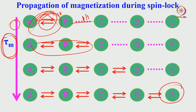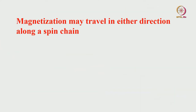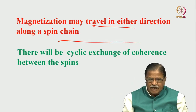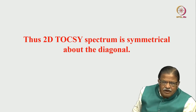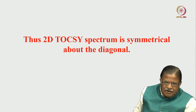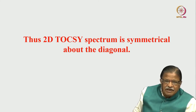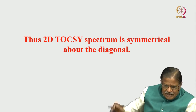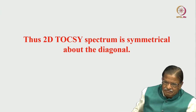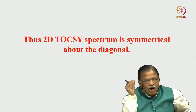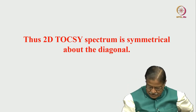So there is a cyclic exchange of energy. If A gives to B and B gives back, and B gives to C and back to A, the TOCSY spectrum is symmetric. Whenever you see the correlation, it is always symmetrical about the diagonal, similar to COSY. The TOCSY spectrum is also symmetrical about the diagonal.